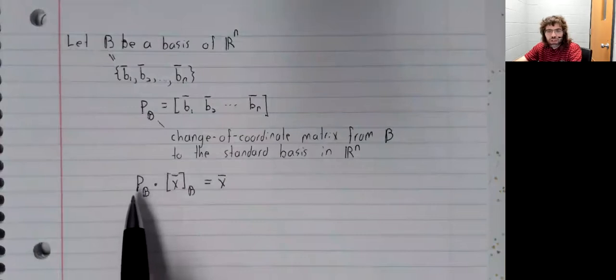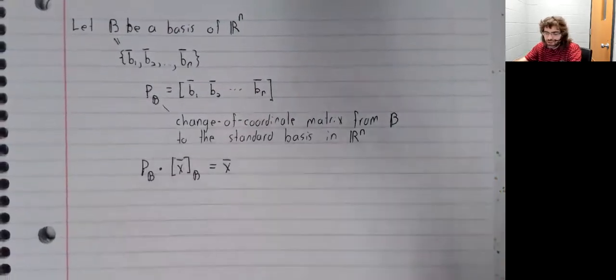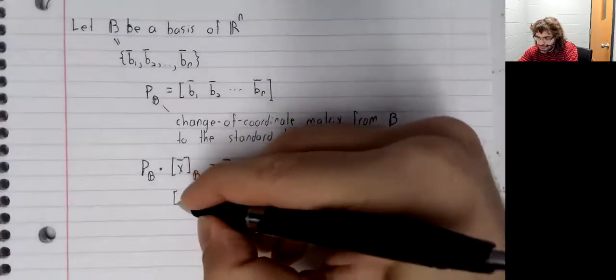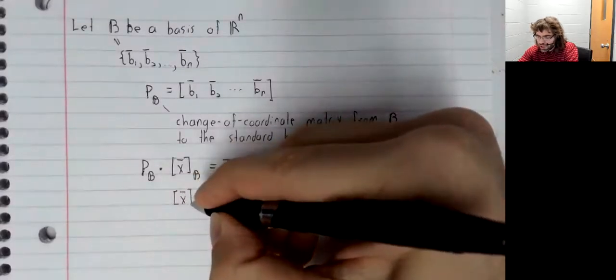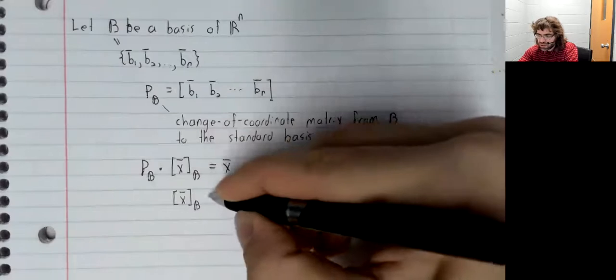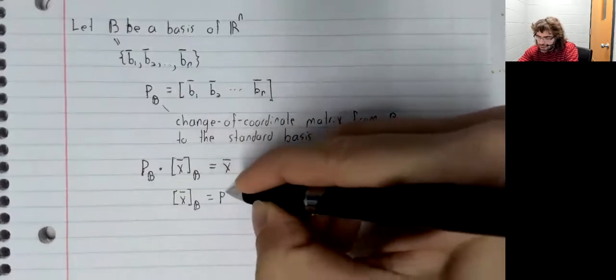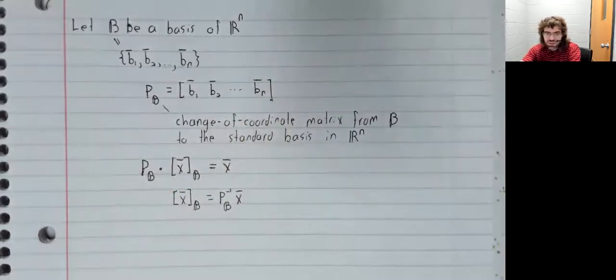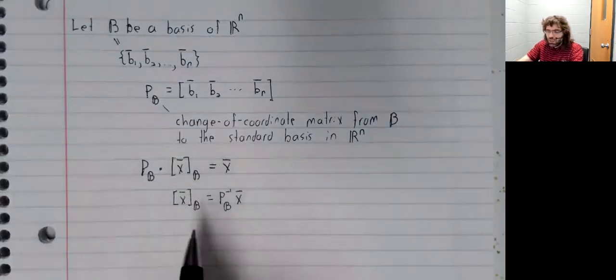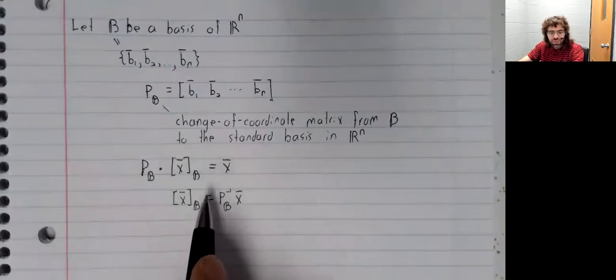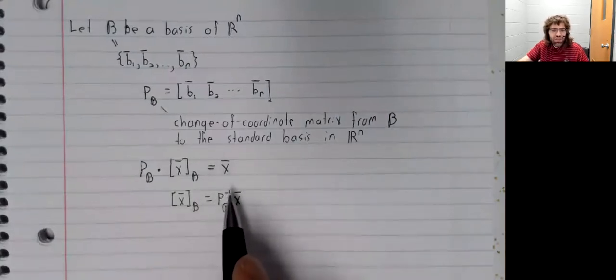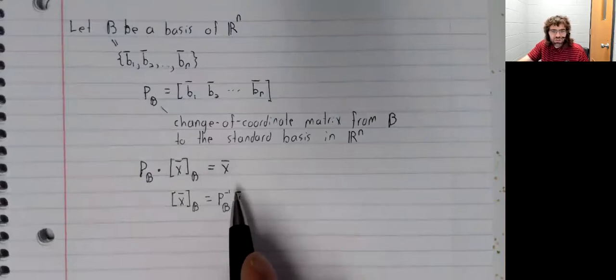This coordinate vector is always invertible. So we could also say that the coordinate vector of x with respect to B is the inverse of this matrix times x. However, we're writing this down as a purely theoretical statement. I've said before, and I'll say again, that we shouldn't actually be finding inverses.